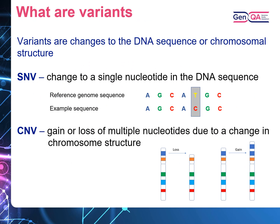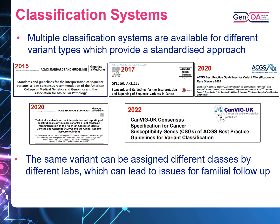We understand our webinar audience includes individuals with a range of genetic expertise. However, just to cover all bases, I like to go back to basics. What are variants? Variants are changes to the DNA sequence or chromosomal structure. Single nucleotide variants are a change to a single nucleotide in the DNA sequence. Copy number variants are gain or loss of multiple nucleotides due to a change in the chromosomal structure. There are multiple classification systems available for different variant types — these are quantitative, evidence-based scoring frameworks that encourage consistency and transparency, allowing a standardised approach.